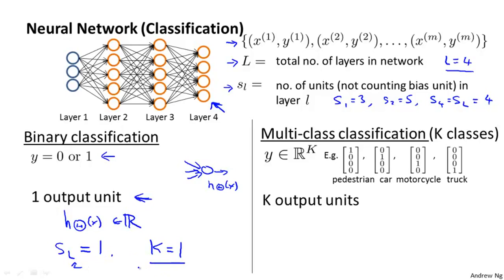The second type of classification problem we'll consider will be a multi-class classification problem, where we may have k distinct classes. Our earlier example had this representation for y if we had 4 classes. In this case, we would have capital K output units, and our hypothesis will output vectors that are k dimensional. And the number of output units will be equal to k.